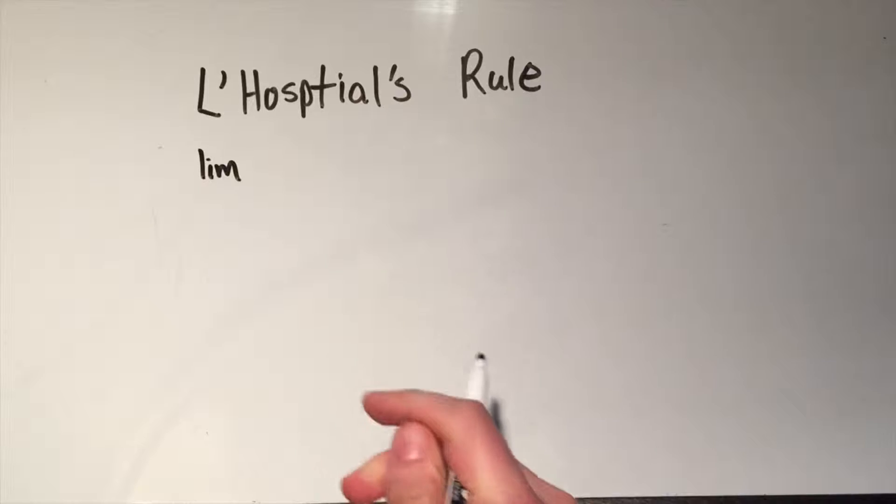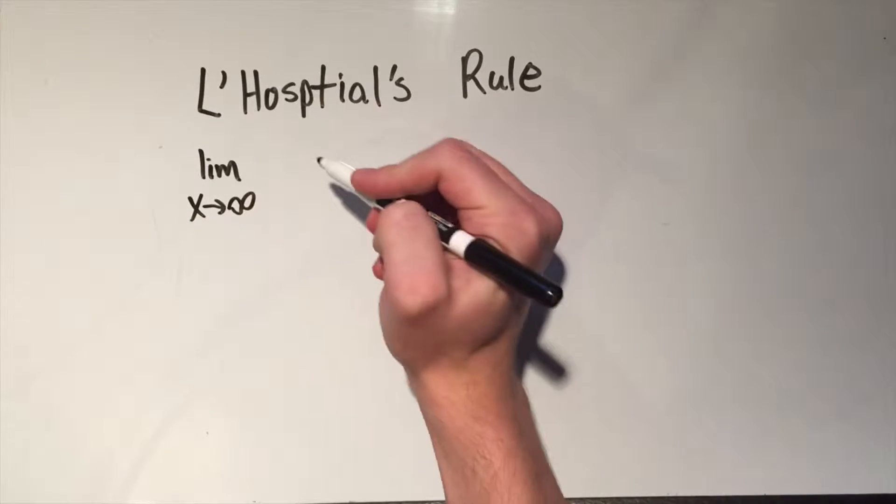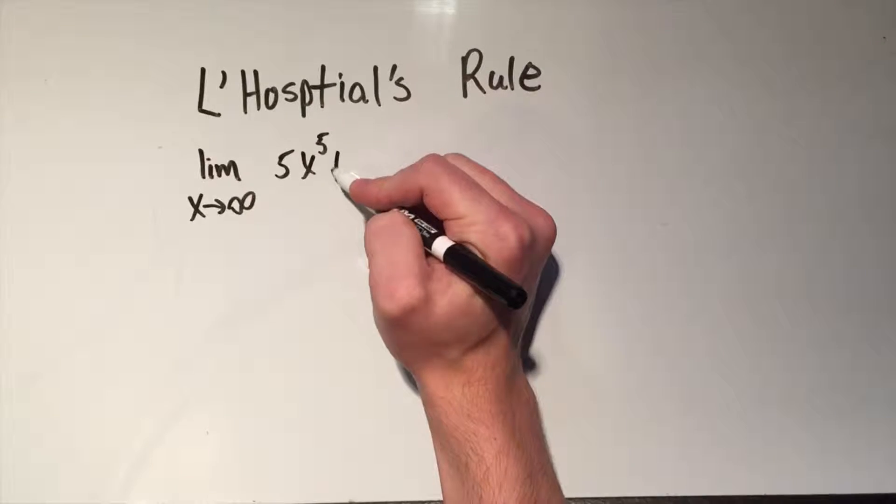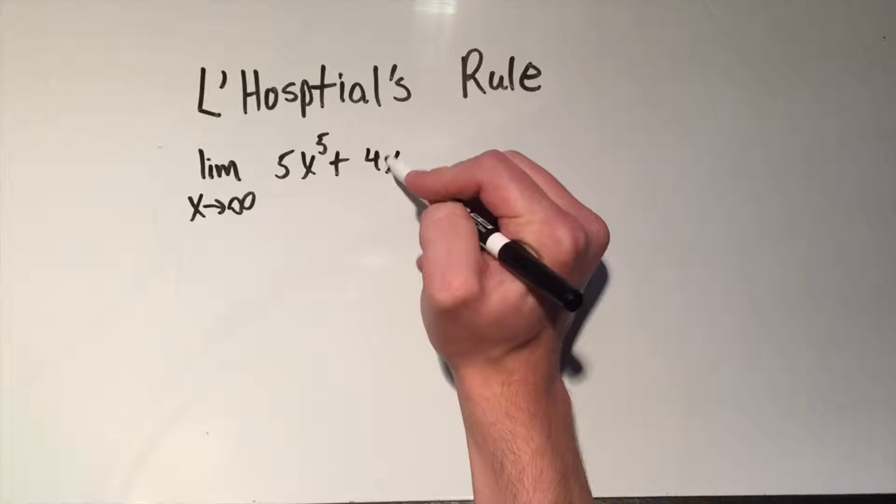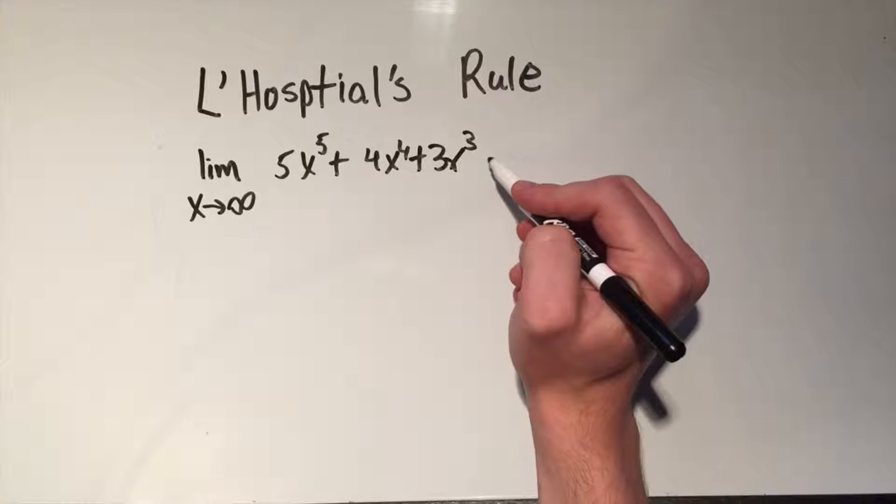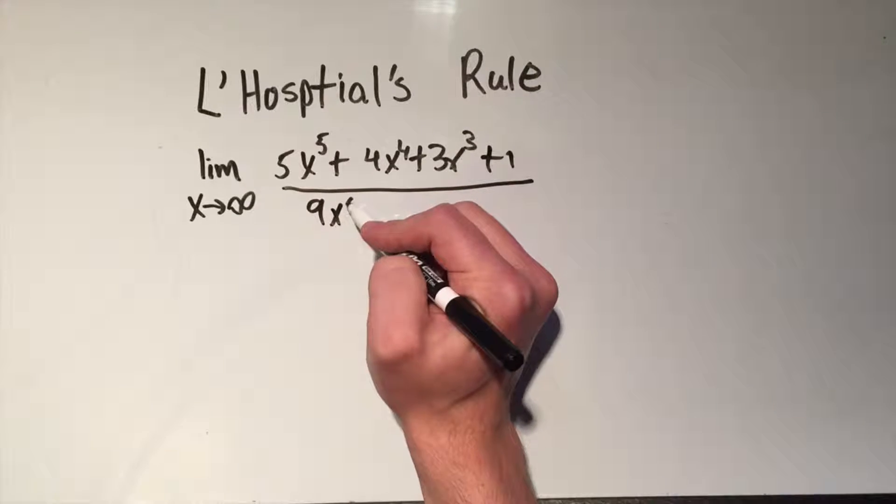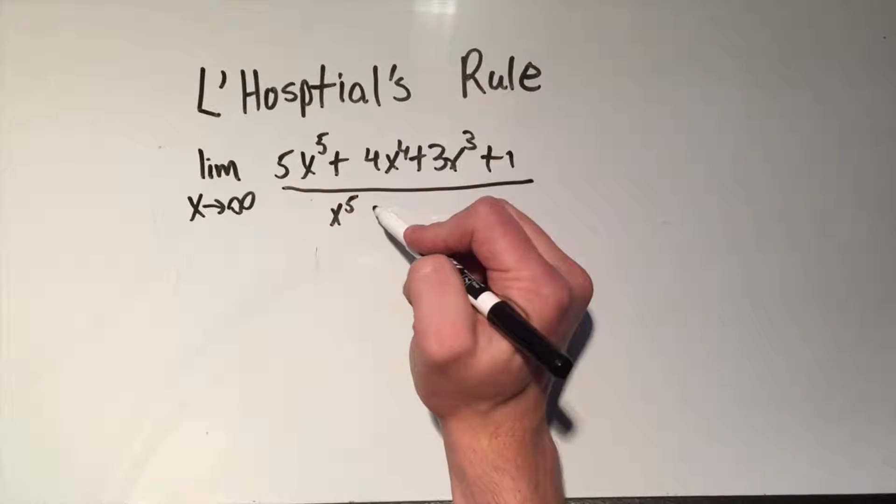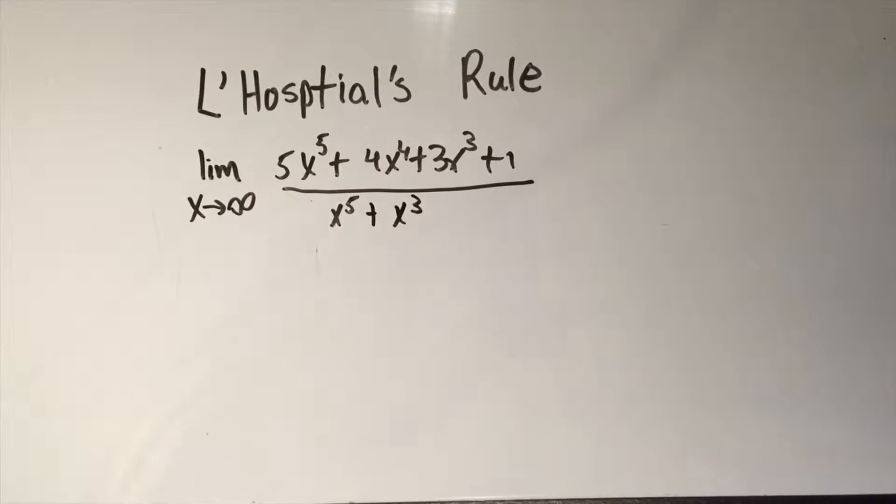I've got the limit as x approaches infinity of 5x to the 5th plus 4x to the 4th plus 3x cubed plus 1 over x to the 5th plus x cubed. Alright, that's good enough.